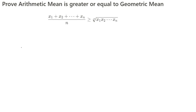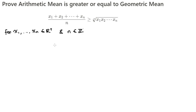Welcome to Math Memo. This is a proof of the AM-GM inequality, which states that the arithmetic mean of a list of non-negative real numbers is greater than or equal to the geometric mean of the same list of numbers.